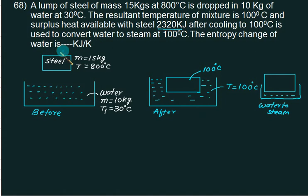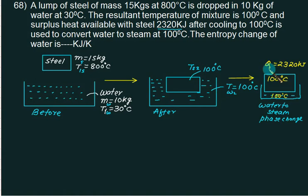You want to find out the entropy change of water. So this one is mass of steel, initial temperature of steel. This is the mass of water, initial temperature of water. This is the final temperature of steel, final temperature of water. And this is the phase change. The heat available for block is 2320 and the temperature of steel block is 100. And the water to phase change will take place at 100. First of all, we will calculate what is the entropy change at this point.